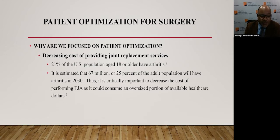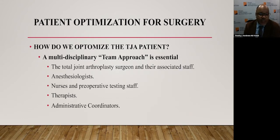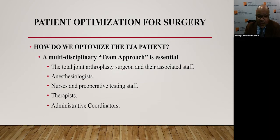We're focused on patient optimization because it's important to decrease the cost of providing joint replacement services. 21% of the U.S. population age 18 and older have arthritis, and it's estimated that 67 million people — or 25% of the adult population — will have arthritis in 2030. Thus, it is critically important to decrease the cost of performing total joint arthroplasty. How do we optimize the total joint replacement patient? A multidisciplinary team approach is essential, involving the TJA surgeon and associated staff, the anesthesiologist, nurses and perioperative staff, therapists, and administrative coordinators.